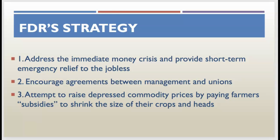FDR's first hundred days ran from March 9th through June 16th. During that period, FDR and Congress together passed a total of 15 legislative measures. We're not going to look at all 15 of these, but we are going to look at some of the most important that come out of this period to help jumpstart the economy and get people back to work.